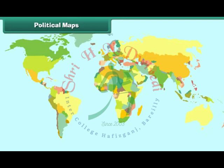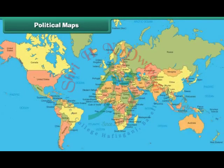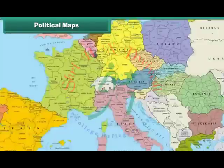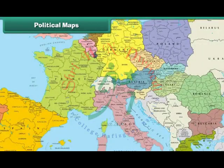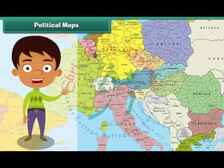A political map is a map that shows lines defining countries, states and territories. Its purpose is to show the political borders. For example, the world political map shows all the countries of the world with their capitals. Similarly, the political map depicts all the political boundaries and also the names and capitals of all the countries in Europe. Thus, political maps help us in understanding the world better.